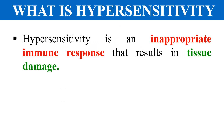What is hypersensitivity? The term itself indicates hyper plus sensitivity — hyper means over. So when your immune system becomes oversensitive and shows some inappropriate response, and that inappropriate response leads to tissue damage, that condition is known as hypersensitivity. In simple words, hypersensitivity is a condition in which your immune system responds inappropriately and results in tissue damage.